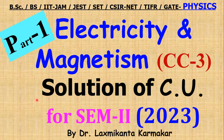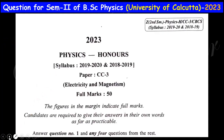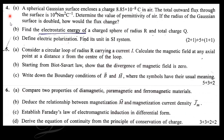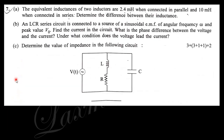Hello everyone. In this video I want to discuss the previous year solution of Calcutta University physics analysis question of 2023, which is electricity and magnetism CC3 paper for semester 2. You can see the total question paper: question number 1 A to G, question number 2 ABCD, question number 3 AB, question number 4 ABC, question number 5 ABC, question number 6 ABCD, question number 7 ABC. We will discuss question number 1, then 2, 3, 4, 5, 6, 7. So let us start today's discussion.